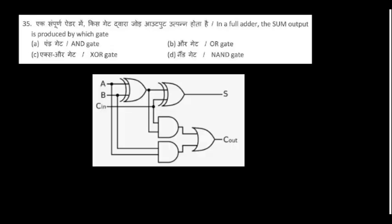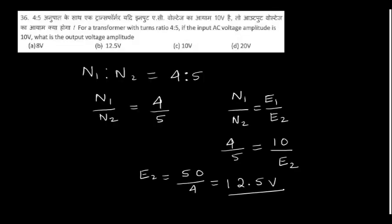In a full adder, the sum output is produced by which gate? It's an XOR gate. Which gate? If the input is 10 volts, what is the output voltage amplitude? We can simply apply n1 upon n2 equals e1 upon e2 equation and calculate, so we'll get 12.5 volts.